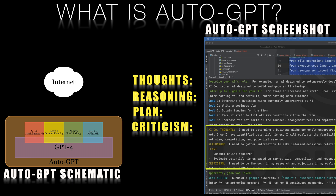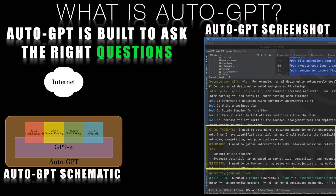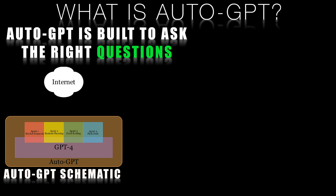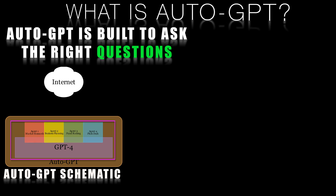Rather than just providing great answers to queries, it excels at coming up with killer questions. This helps it access relevant knowledge from the internet that it can use to enhance the intelligence of GPT-4, the AI language model on which Auto-GPT is built.